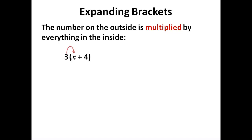3 multiplies by the x and then the 4 to give us 3x plus 12. That's 3 times plus 4 is plus 12. x multiplied by x is x squared, and multiplied by plus 4 is plus 4x.